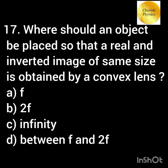Where should an object be placed so that a real and inverted image of the same size is obtained by a convex lens?